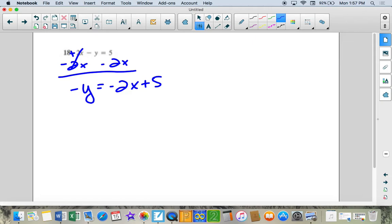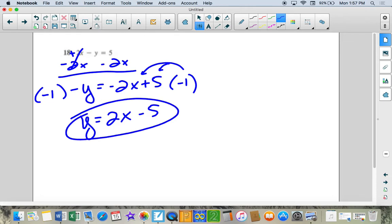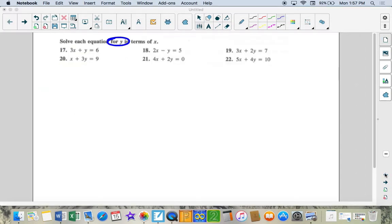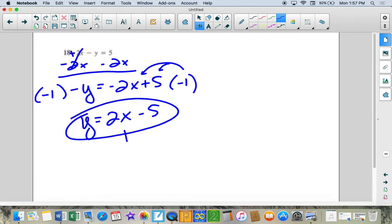Now, we haven't gotten y by itself. There's a negative 1 in front of it. And there's a couple ways that we can get rid of a negative. But I'm going to show through multiplication. And we have to distribute it to both terms. So that gives me this. Negative 1 times negative 2x is positive 2x. Negative 1 times positive 5 is negative 5. So that would be my answer. Notice it says y equals. So we've solved for y in terms of x. Meaning our answer has the variable x in it. That's in terms of x.